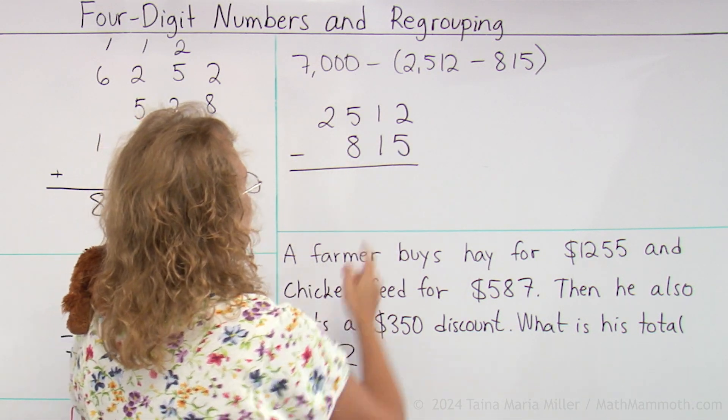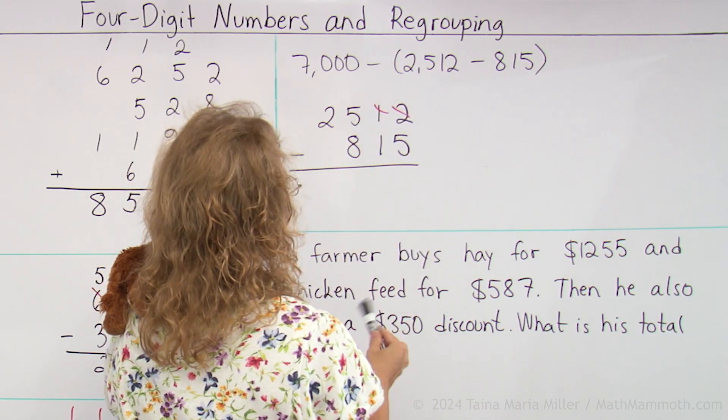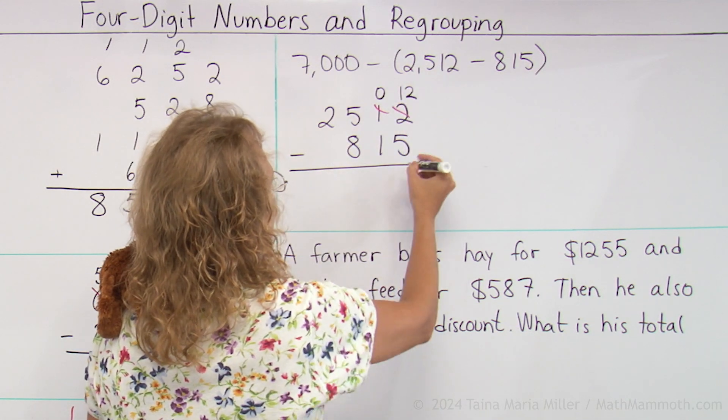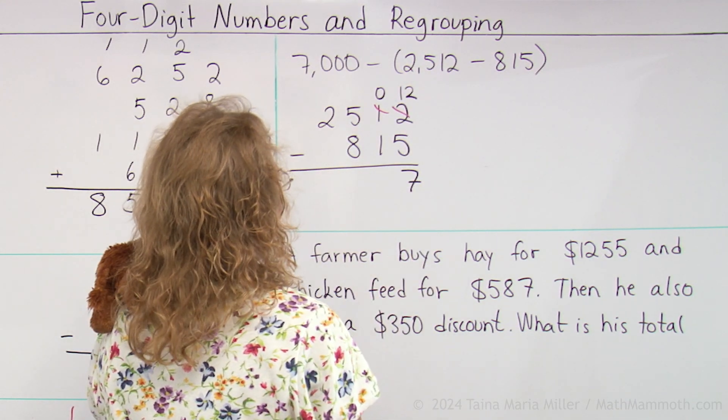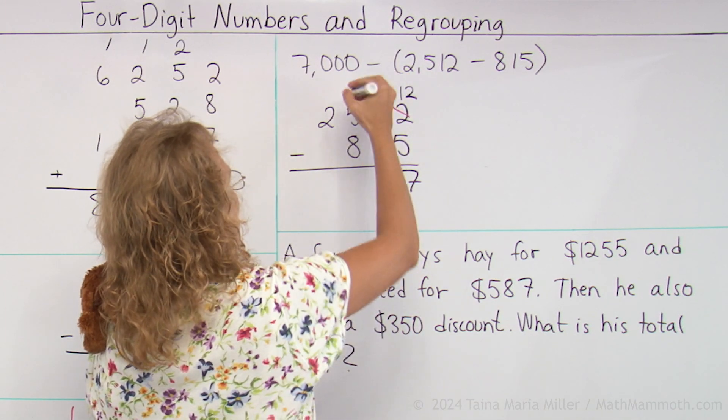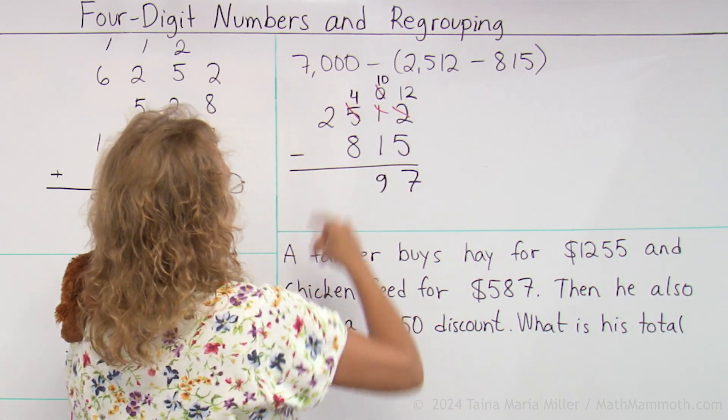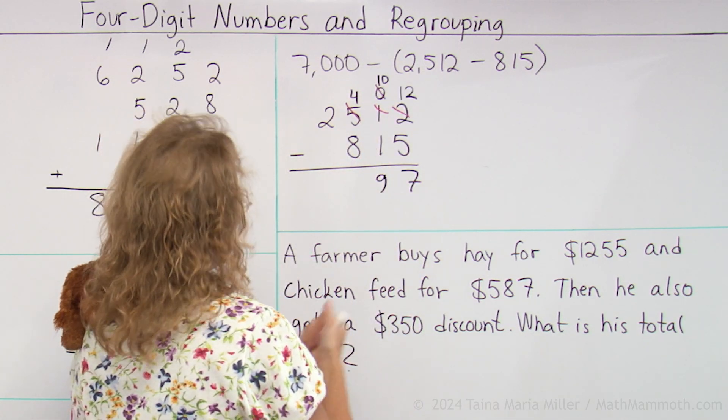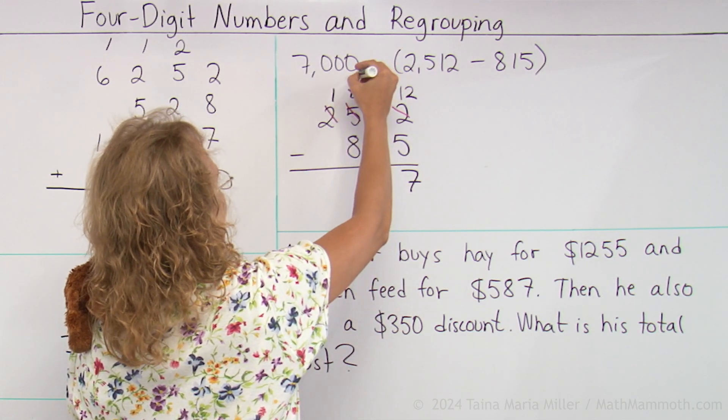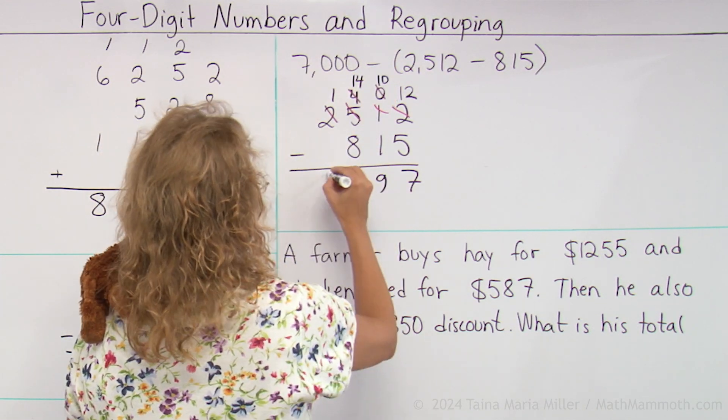Two minus five, you cannot do, so regroup. Regroup right off the bat, leaving zero here in the tens and twelve here. And then again, zero minus one, can't do that. Regroup. So four here, ten here. And then lastly, four minus eight, we cannot do. Regroup, leaving one here. Fourteen. So we get six and one.